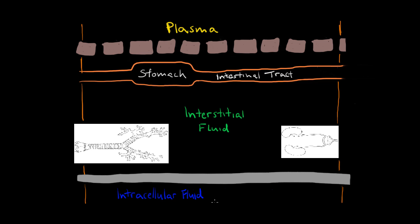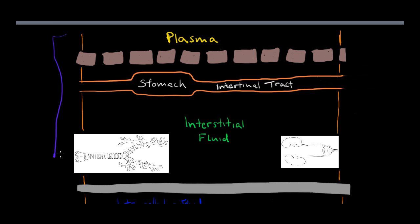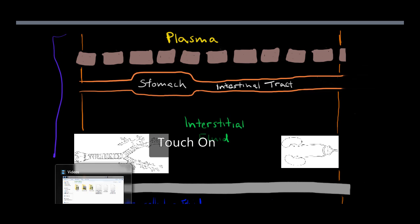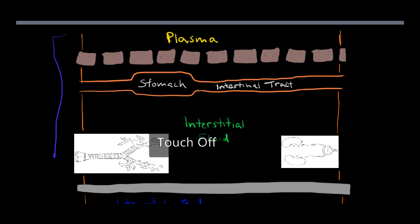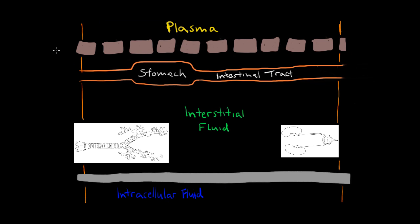Now we see another distribution. We have three compartments: plasma, interstitial fluid, and intracellular fluid. We've already talked about intracellular fluid, and now we're talking about extracellular fluid. If this is intracellular fluid, then you can see that plasma and interstitial fluid are considered extracellular fluid — it's outside the cells.